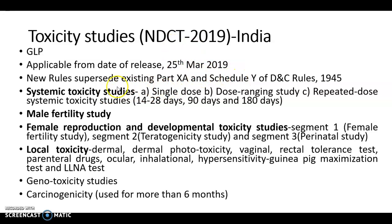As per New Drugs and Clinical Trial Rules, the first category of toxicity studies you have to do is systemic toxicity studies. These include single dose toxicity study, dose ranging studies, and repetitive dose systemic toxicities of 14 to 28 days, 90 days, and 180 days. For single dose toxicity, you have to use two rodent species: mice and rat.